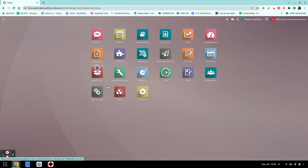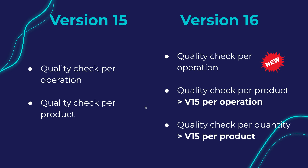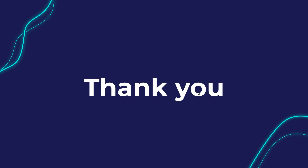So there you go. The new feature is that for one transfer you can set one quality check regardless of which products are being transferred. The quality check per product equals what was the quality check per operation in the previous version, and the quality check per quantity equals what was the quality check per product in the previous version. Thank you so much, and I hope you enjoy testing out the new features.